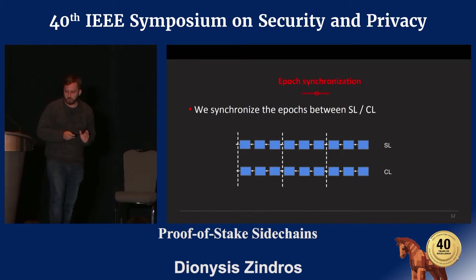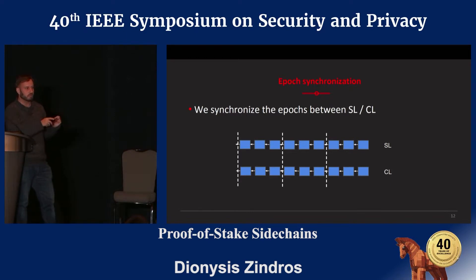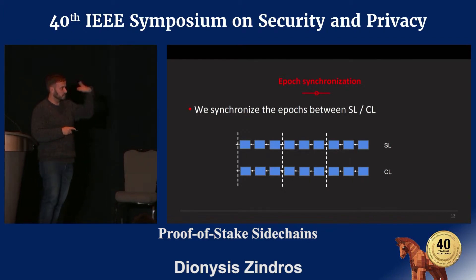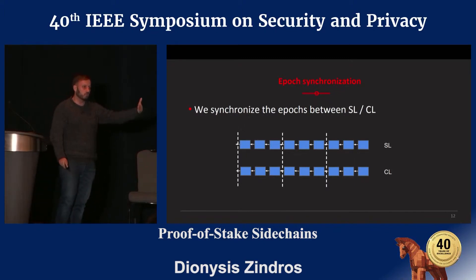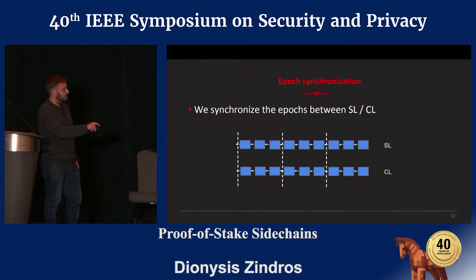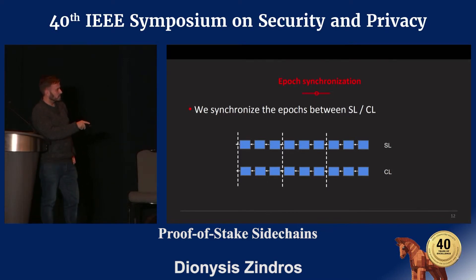In order to solve this problem, we synchronize the epochs of the two chains. In the Ouroboros blockchain, epochs are periods of time containing blocks, with slots where in each slot there is an elected leader responsible for creating a block. Leader election happens at the beginning of every epoch, the leaders are elected for the rest of the epoch, and then at the end of the epoch a new election takes place. Given this, we synchronize these epochs between the two layers.